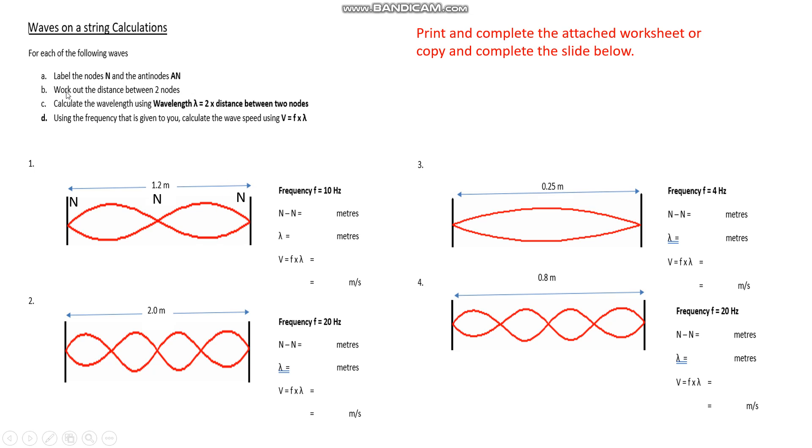So we've done that. Part B, work out the distance between two nodes. Okay, well, the total length of the string is 1.2 meters, and we've got two pairs of nodes here. So if that distance is 1.2, then the node to node distance here must be half of that, 0.6.